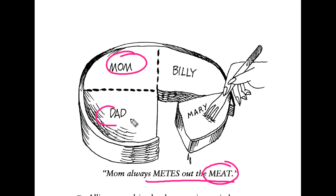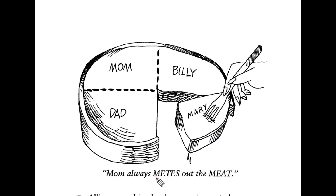For example, there are four parts that are divided. Mom is going to distribute — means mom is going to mete out the meat. Mom is going to distribute the meat.